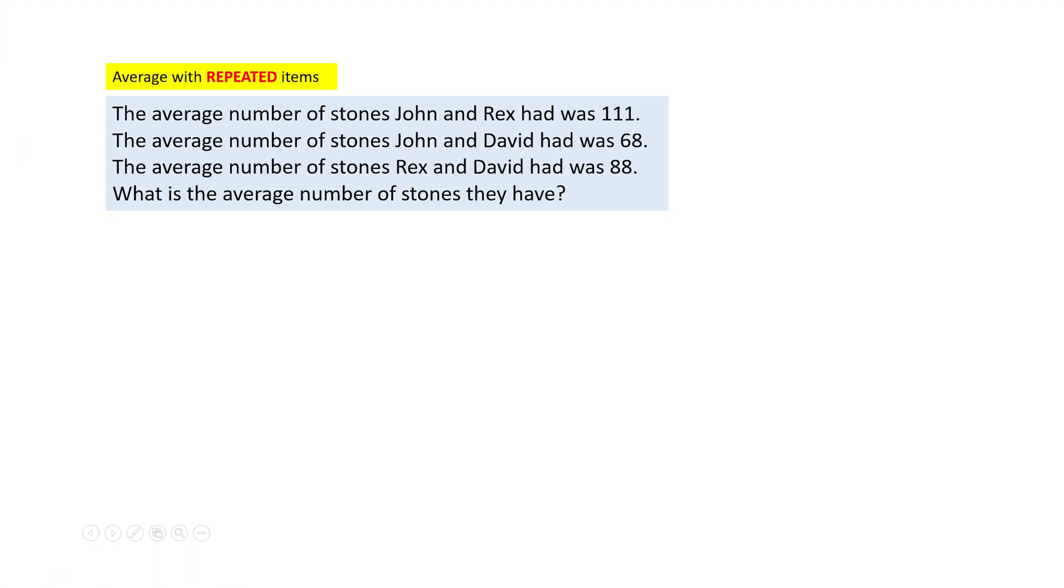As you read the story, you will see that their names are repeated again and again. The average number of stones John and Rex had was 111. So this is how we're going to write J plus R equals to 111 times 2, and this will give you the answer 222.